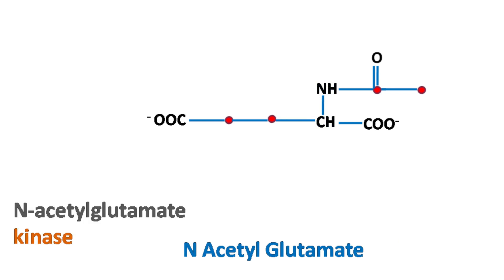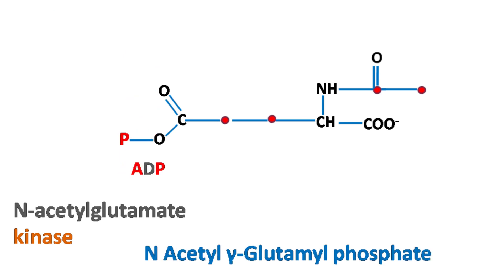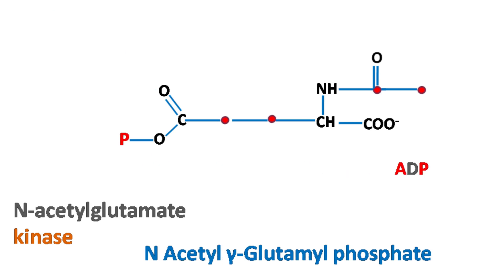Next, ATP reacts with acetylglutamate to form N-acetyl gamma-glutamyl phosphate. The enzyme involved in this reaction is N-acetylglutamate kinase.